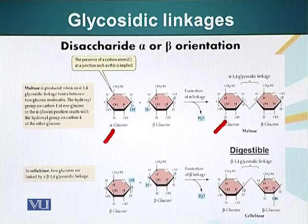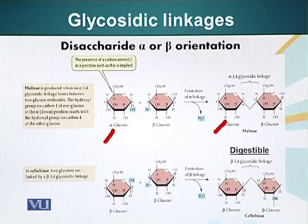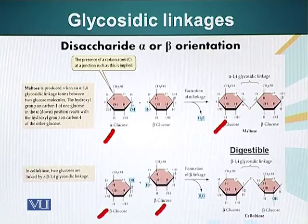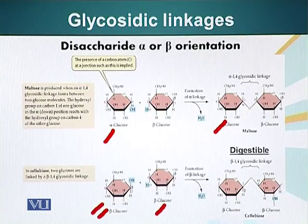We have talked about the bond between alpha glucose and beta glucose. Now let's look at a bond formed between two beta glucose molecules, shown in the lower part of the screen. Here is a beta glucose forming a bond with another beta glucose molecule. It is the same process — a water molecule is going to be removed in a condensation reaction, and since the glucose on the left was in beta configuration, this bond will be called beta-1,4 glycosidic linkage.